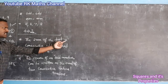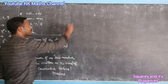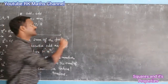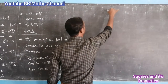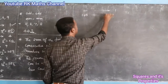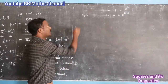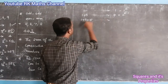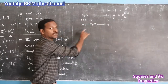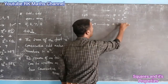The sum of the first n consecutive odd natural numbers equals n squared. For example, the odd numbers are 1, 3, 5, 7, 9... One number: 1 equals 1 squared. One plus three equals 4, which is 2 squared. One plus three plus five equals 9, which is 3 squared.